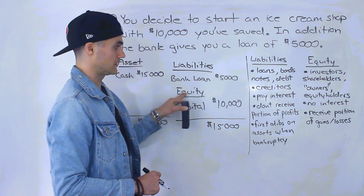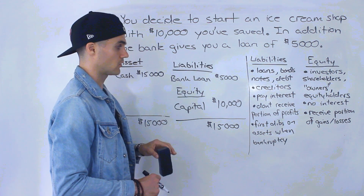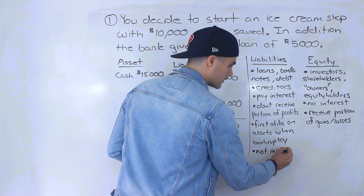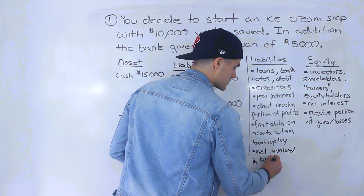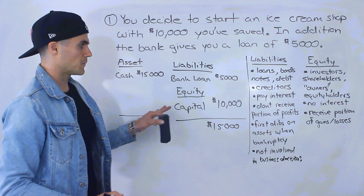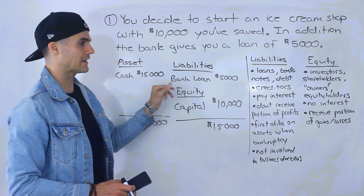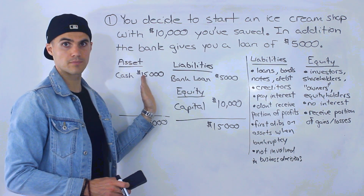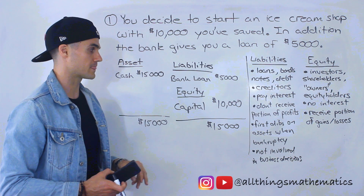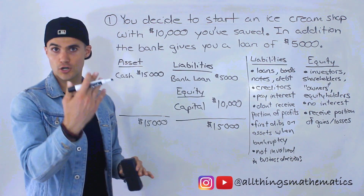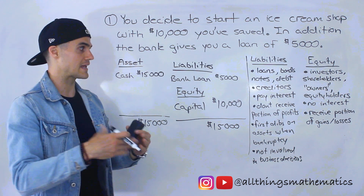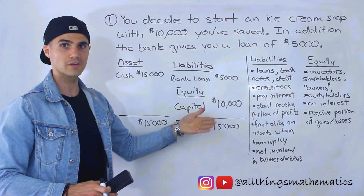Another difference between liabilities and equity is that creditors are not involved in business decisions. If you get $5,000 from the bank, the bank is not going to tell you how to run the ice cream shop — who to hire, etc. That's going to be up to you as the owner. Before they give you the $5,000, they'll look at your credit and maybe your business plan, but that's all up front. Once they decide to loan you the money, they're not really going to be checking up on you.